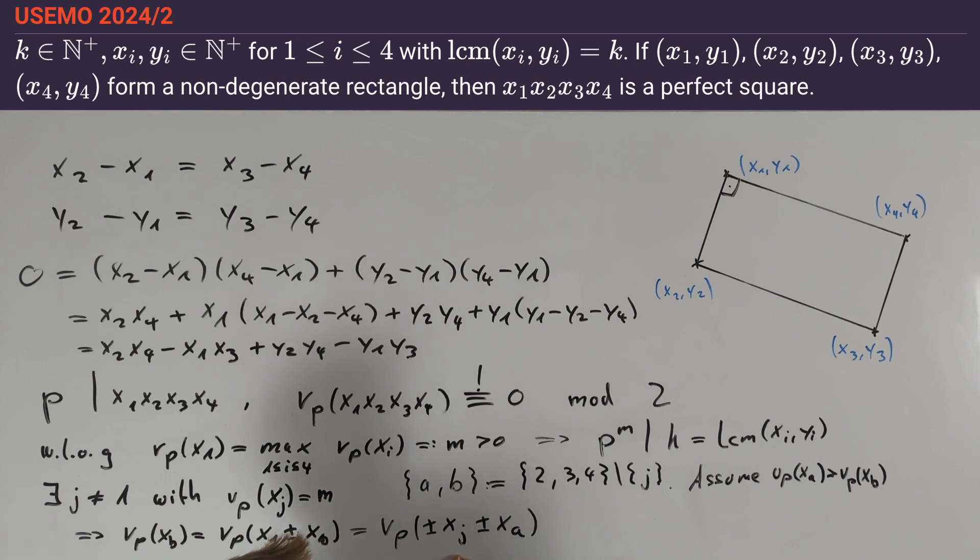Since nu_p(xj) ≥ nu_p(xa), we conclude that this is ≥ nu_p(xa), and this is clearly a contradiction.